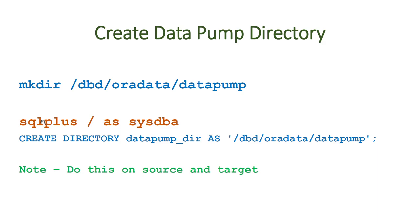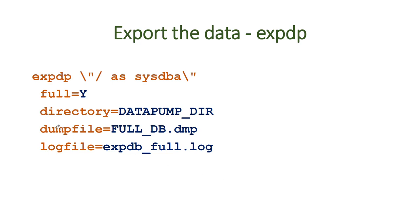To create the Data Pump directory, you first use the make directory command at the OS level. This is the directory where export will store files and import will pick them up from. Once that is done, log in as a SQL DBA and tell Oracle the path. You can see the path matches — we use 'CREATE DIRECTORY datapump_directory' pointing to that path. These steps need to be done on both the source and target database.